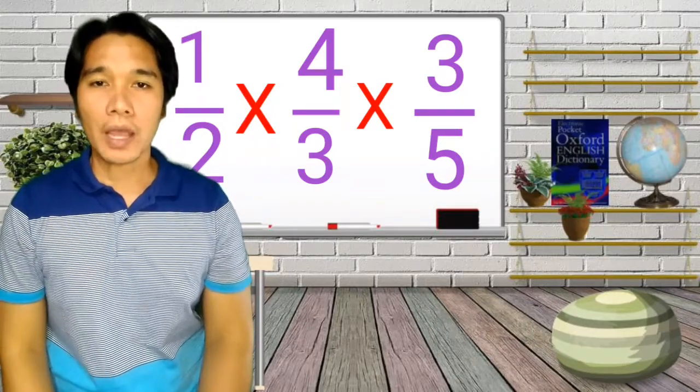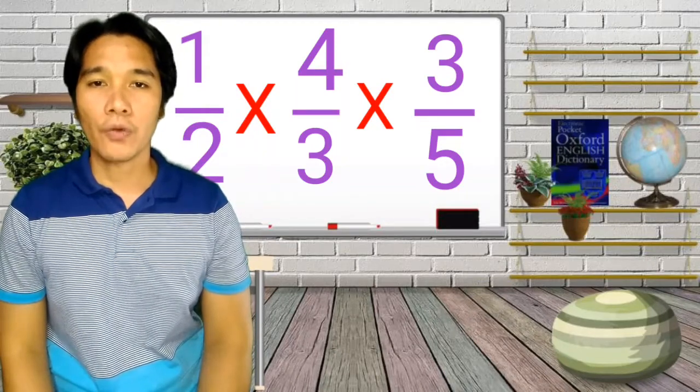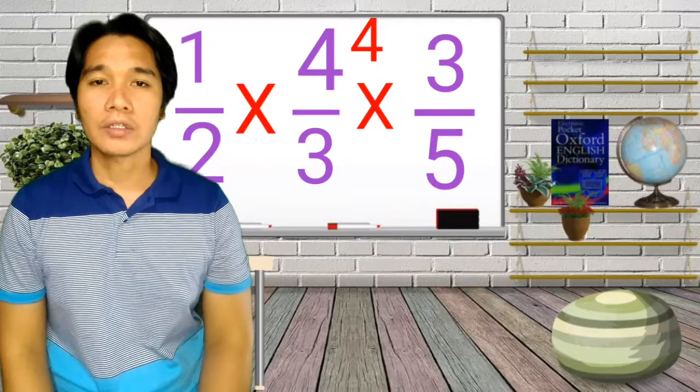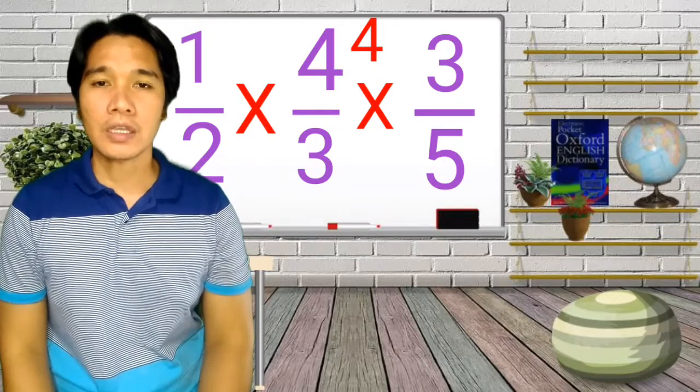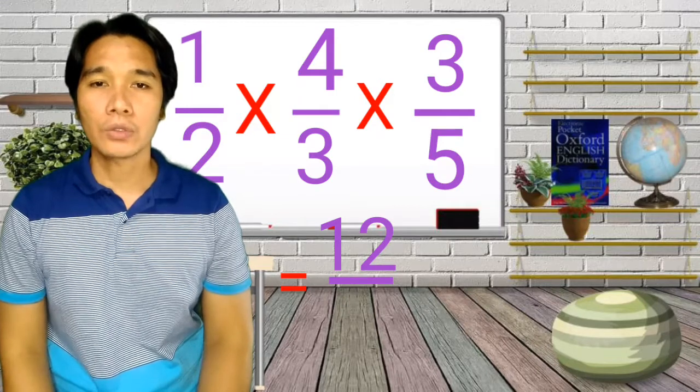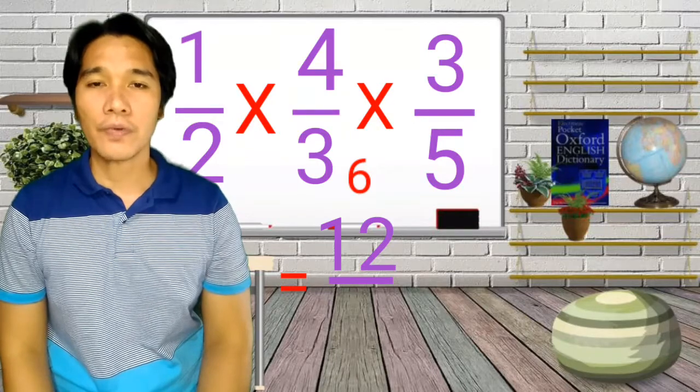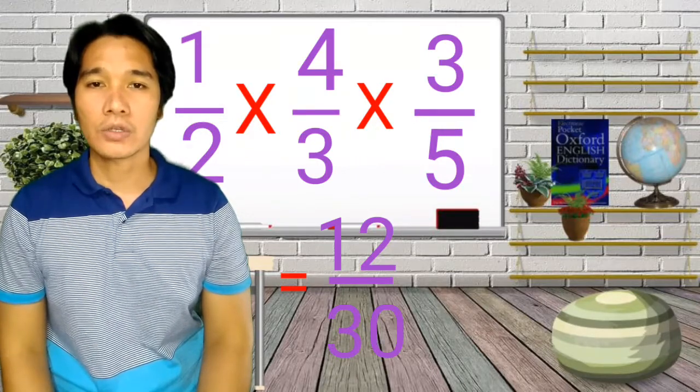So, we have to multiply the numerator. So, we have 1 times 4 is 4. Then, 4 times 3 is 12. And then, for the denominator, we have 2 times 3 is 6. And then, 6 times 5 is 30.